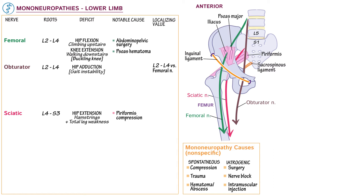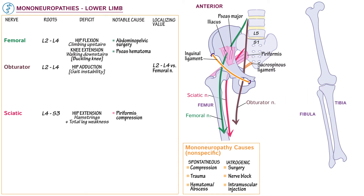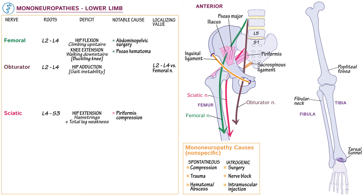Next, let's address peroneal and tibial neuropathies. Draw the femur, fibula, tibia, and a consolidation of the bones of the foot. Indicate that the popliteal fossa is the depression behind the knee, and that the fibular neck is the continuation of the head of the fibula — the top of the lateral leg bone. Indicate the tarsal tunnel as the medial entry zone of the tibial nerve through the ankle into the foot. The medial malleolus and the medial calcaneus form the superior and inferior boundaries of the tarsal tunnel, and the flexor retinaculum forms its roof.